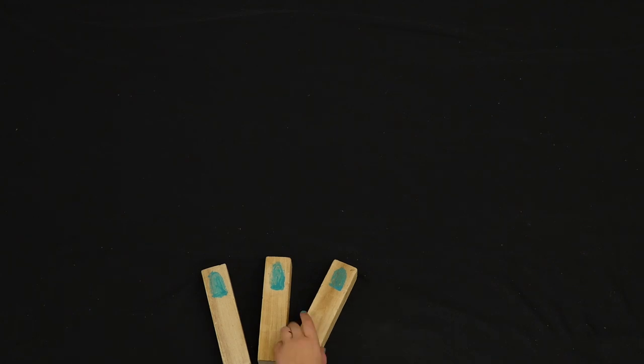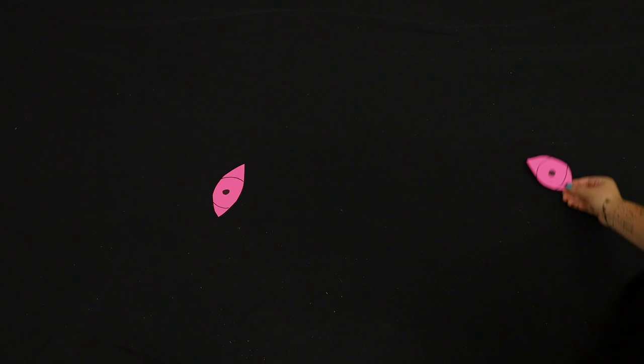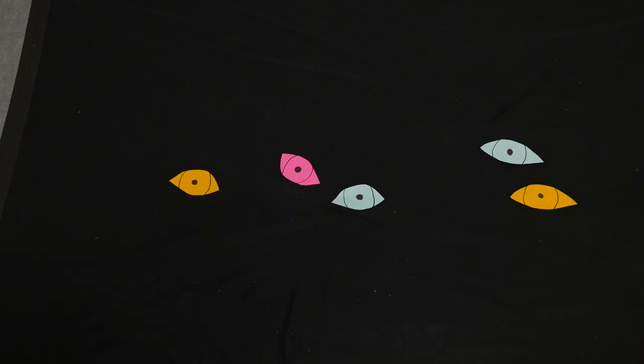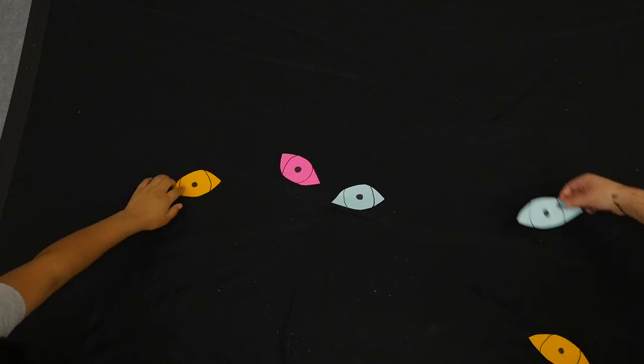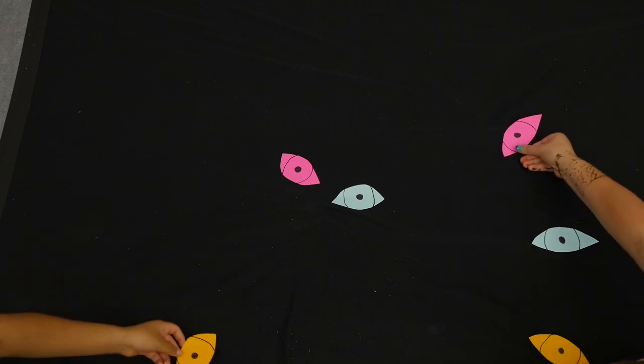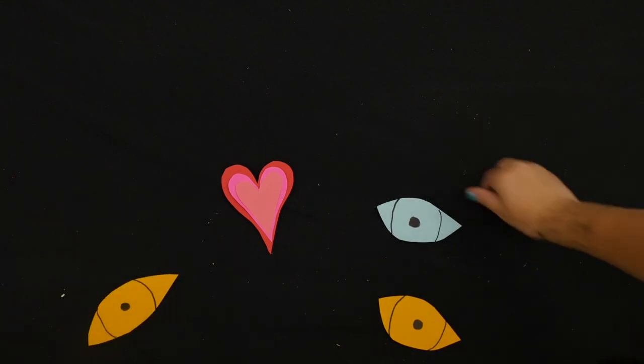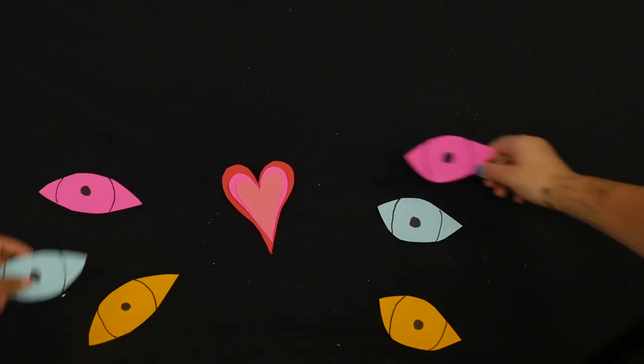She paints her nails blue to match the dress she's wearing. She does it all for you, just in case you're staring. She wants her eyes to linger on the parts of her she likes. So that's why she paints her finger and wonders when it'll strike.